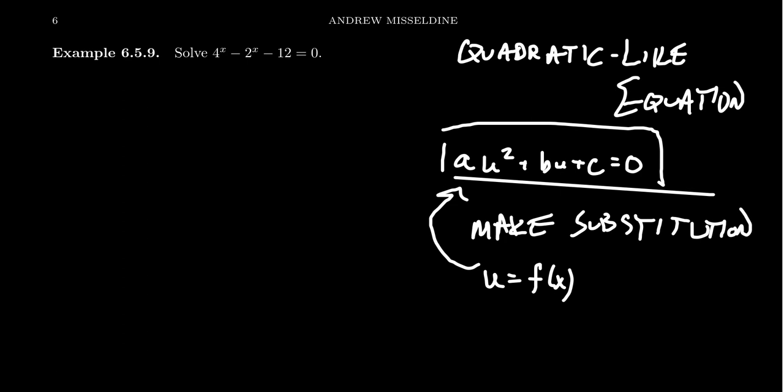What I claim here is that this equation you see on the screen is quadratic-like. But what's my U? It's going to be a function of x. I'm going to make a U substitution, for which I'm going to make the substitution U = 2^x. Notice that -2^x just becomes a U. You have a -12 that's constant equals 0. So how do you deal with the 4^x?